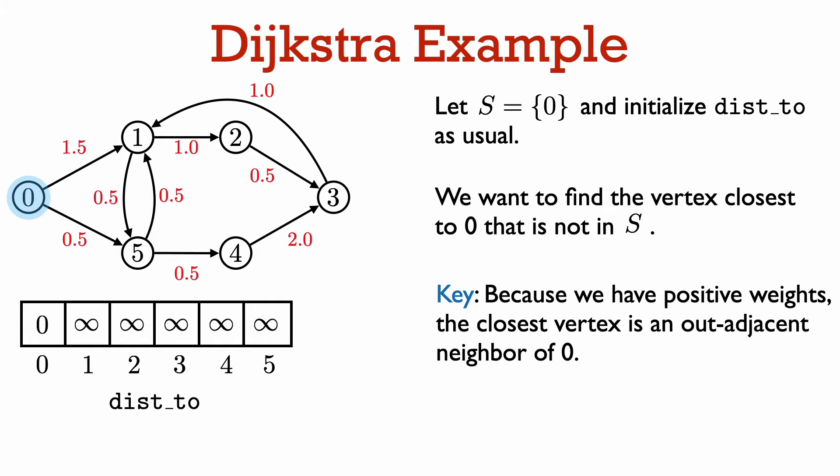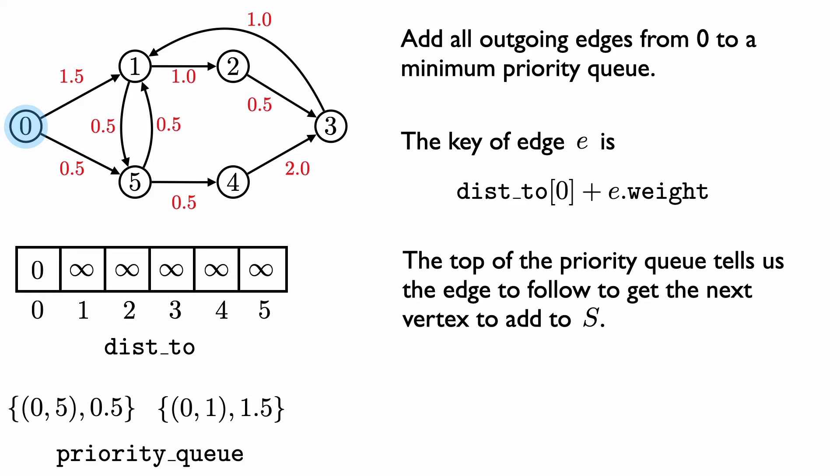Let's see how Dijkstra's algorithm works via an example — how we iterate over vertices in order of their distance from 0. We let S contain just the source vertex 0 and initialize the dist2 array as usual. Now we want to find the closest vertex to 0 not already in S. The key observation is that the next closest vertex must be an out-adjacent neighbor of vertex 0, specifically the one closest to vertex 0. This holds because edge weights are positive, so to get the next vertex to add to S, we follow the minimum weight outgoing edge from 0 and add all outgoing edges from 0 to a minimum priority queue.